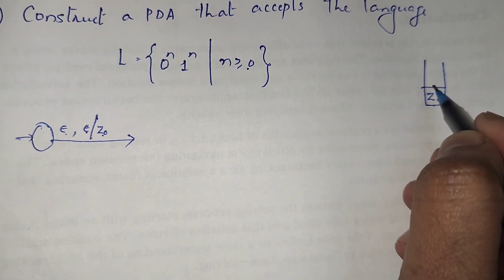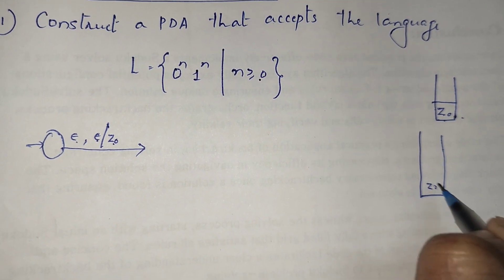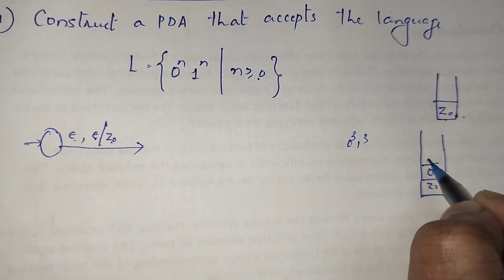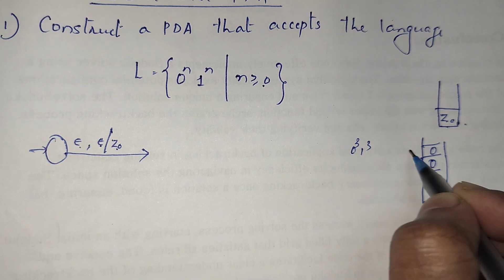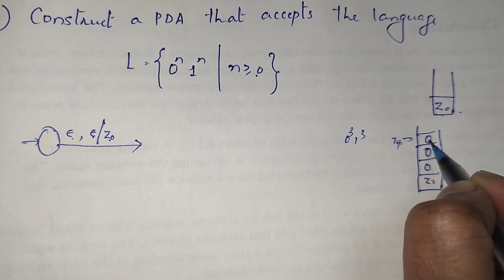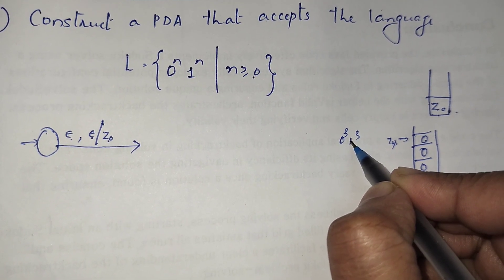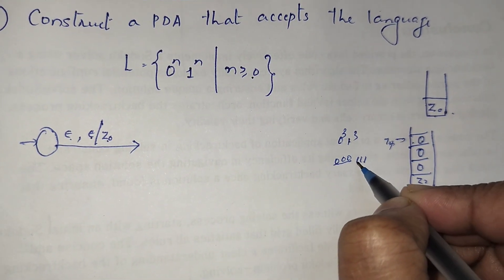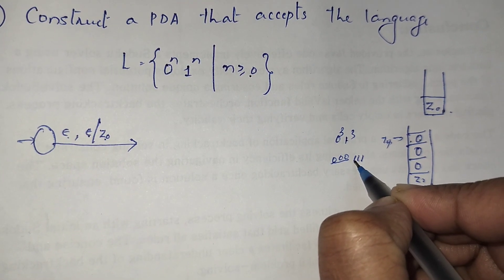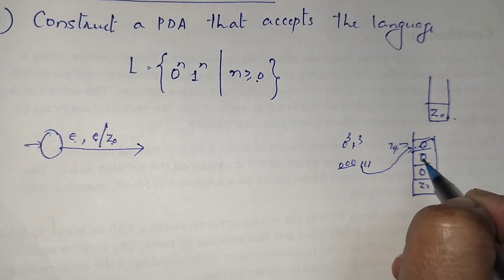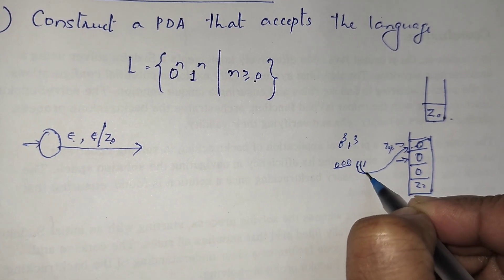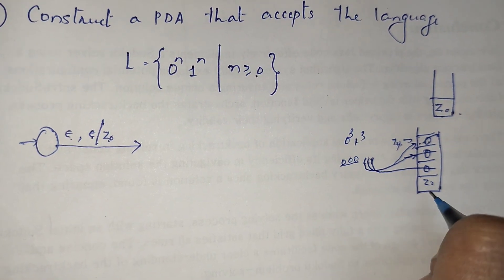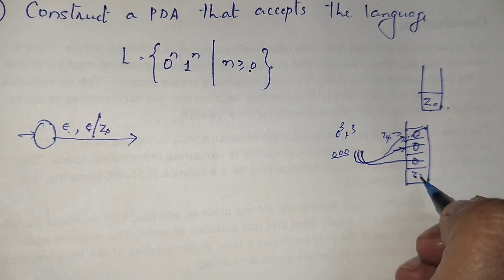Whenever we are seeing zeros and Z0 is on top, we push zeros to the stack. For example, with zero cubed one cubed — three zeros — whenever we see a zero we push it to the stack. So: zero zero zero, one one one. Whenever we see a zero we push to the stack; whenever we see a one we pop a zero. When I see the first one I pop the first zero, when I see the next one I pop the next zero, and so on.